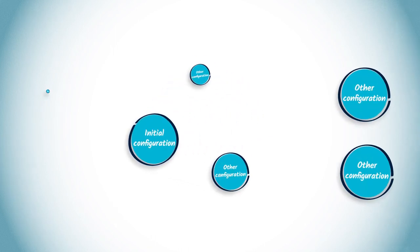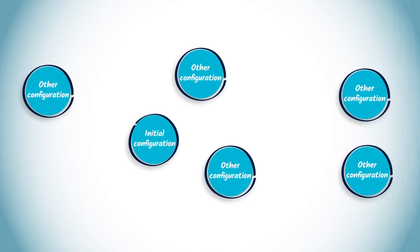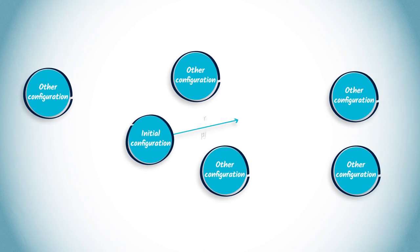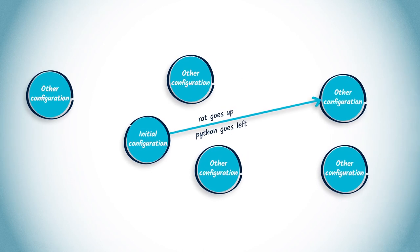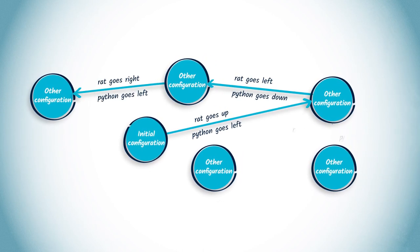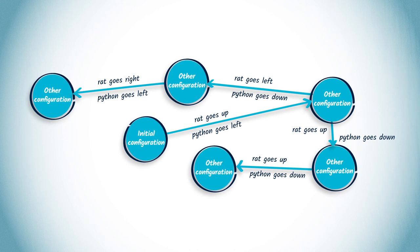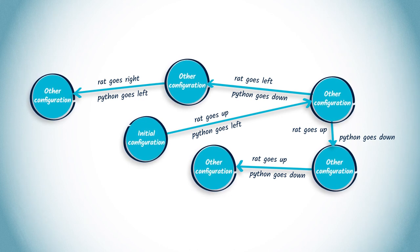There is an initial vertex corresponding to the initial configuration, where both the rat and the python have score zero and are at their starting positions, and all pieces of cheese are spread throughout the maze. There are also vertices corresponding to all possible configurations during a game. Vertices are connected by edges labeled according to two variables: the first corresponds to the decision made by the rat, and the second to the decision made by the python.